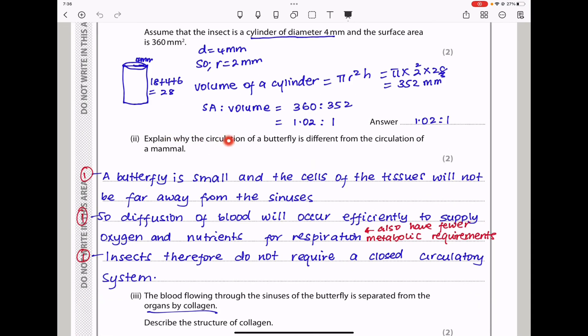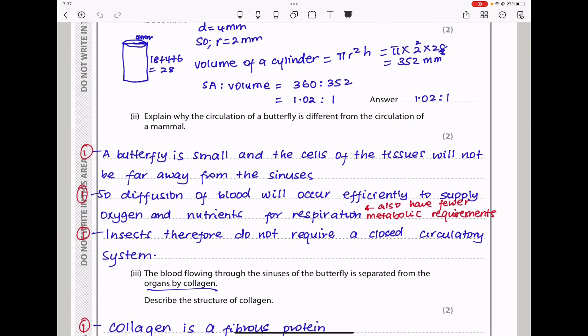The next part they say explain why the circulation of a butterfly is different from the circulation of a mammal. This is going to be different based on the metabolic demands as well as the size of the organism. So I said a butterfly is small and the cells of the tissues will not be far away from the sinuses. So the diffusion of blood will occur efficiently to supply oxygen and nutrients for respiration. So insects, therefore, do not require a closed circulatory system. In the case of animals and other organisms that require closed circulatory system, it's because their surface area to volume ratio is quite lower. Therefore, they also have many metabolic demands, and therefore efficient supply of oxygen and nutrients for aerobic respiration is very important.